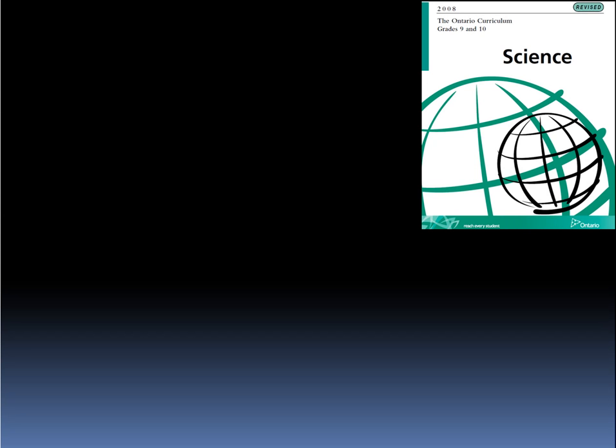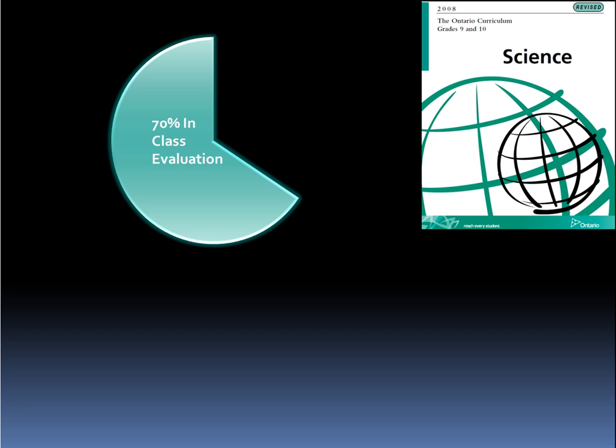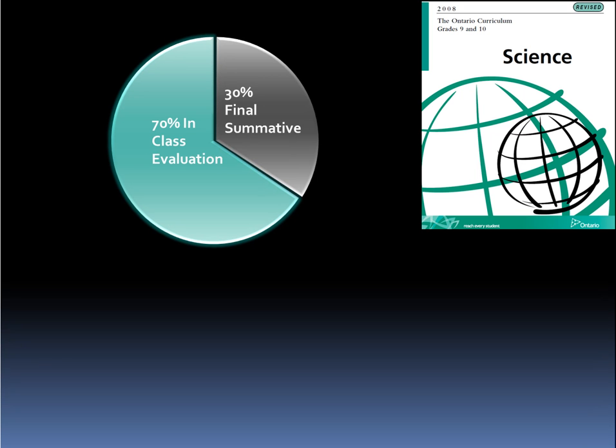This presentation is an explanation of the weighting system in MarkBook. When you look at any curricular document, we see that 70% is allocated towards in-class evaluation, and 30% for some kind of summative evaluation.